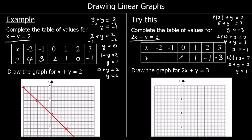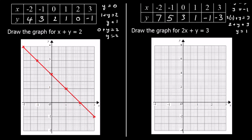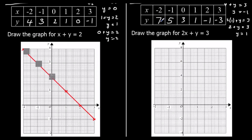You might be able to spot the pattern already. For x equals 0: 2 zeros plus y is 3, so y is 3. We can see going from right to left it's going up in 2s, or from left to right going down in 2s. So let's plot the graph: negative 2, 7; negative 1, 5; 0, 3; 1, 1; 2, negative 1; and 3, negative 3. Join them up for a straight line, and that is our graph.